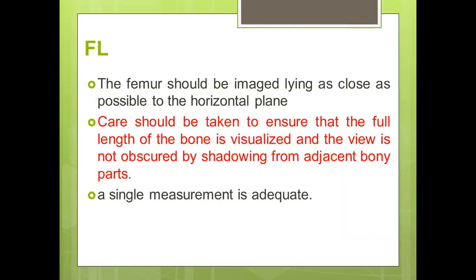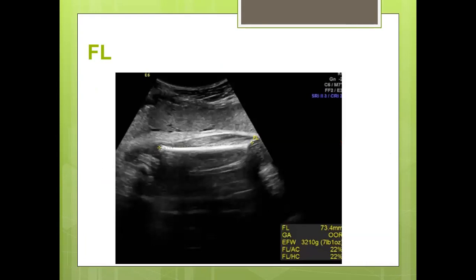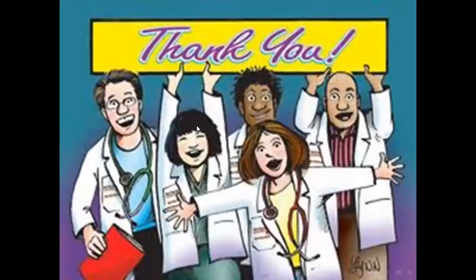The last measurement is femur length. Femur length should be measured with the femur lying as close as possible to the horizontal plane. Care should be taken to ensure the full length of the bone is visualized. A single measurement is adequate. We prefer the femur to be in a horizontal plane, not angled, and measure the longest distance between the ends of the bone to get a good result.